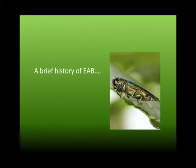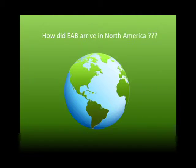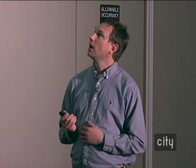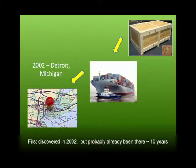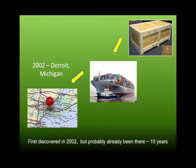Emerald ash borer came from Asia — most people say China. It's believed it got here in wooden crates and cargo ships, and it landed in Detroit. It was officially found here in 2002, but now that we've learned more, we think it might have actually been here 10 years prior — we just hadn't located or found it.